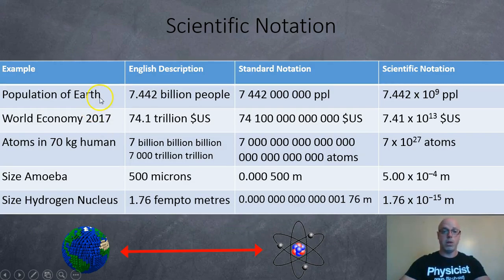So here's a few more examples. Population of the Earth. According to the website today, there was around 7.442 billion people. In standard notation, that's 7,442 million people. And so if we move the decimal over from here, 3, 6, 9 jumps, we get 7.442 times 10 to the 9 people.